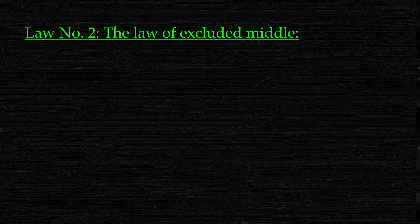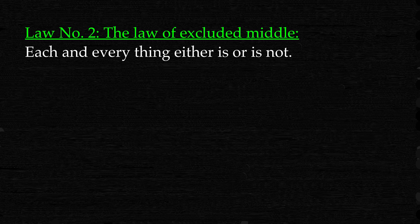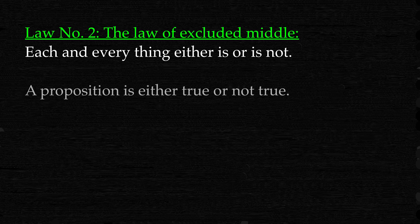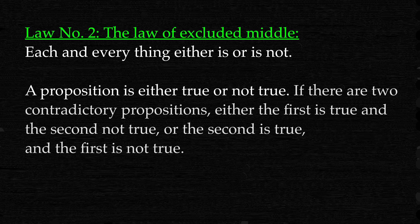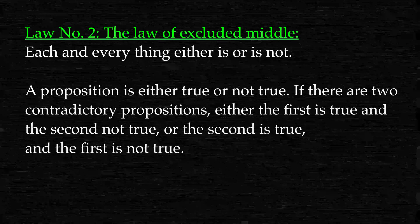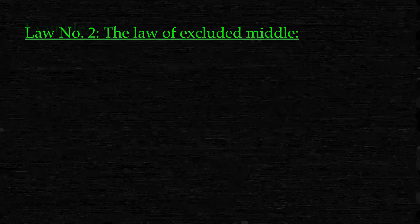Law 2: The law of excluded middle. Each and everything either is or is not. A proposition is either true or not true. If there are two contradictory propositions, either the first is true and the second not true, or the second is true and the first is not true.